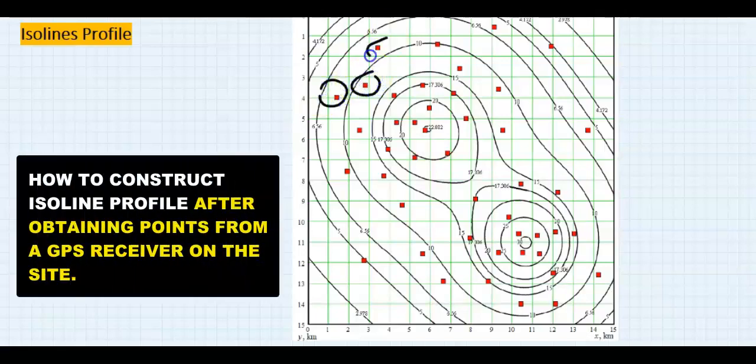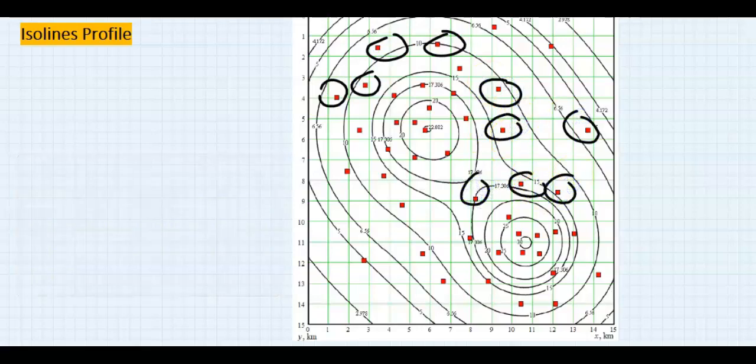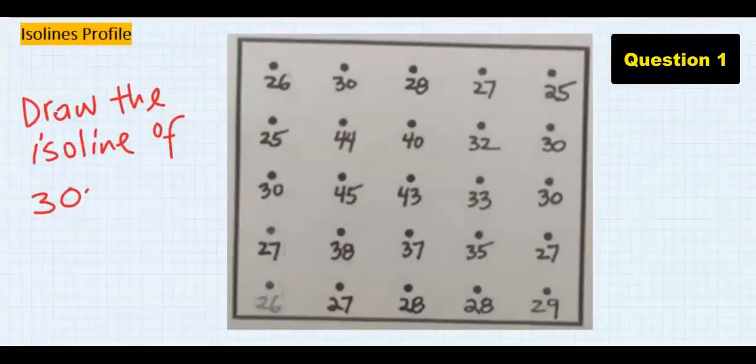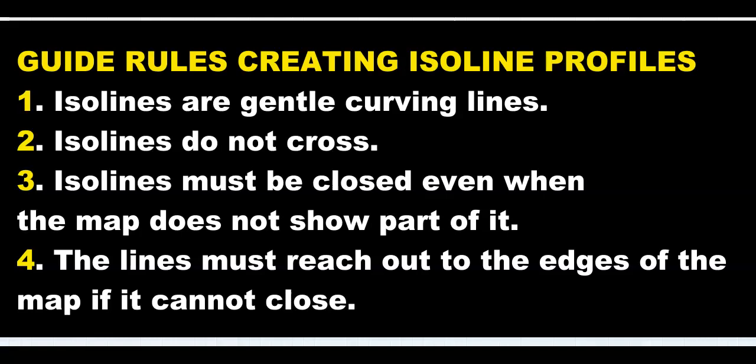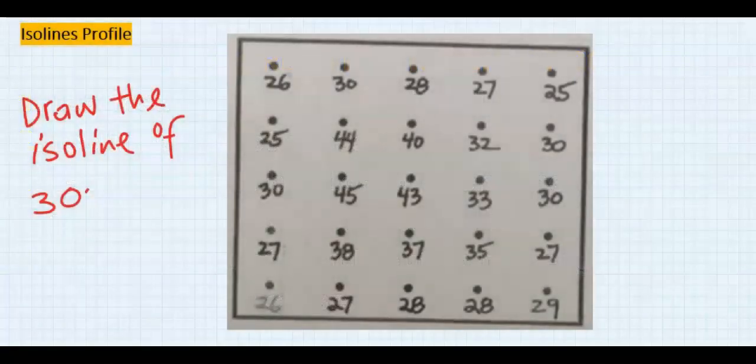Now that we have identified all the points needed, let's learn how to draw the isoline profile. Let's draw an isoline profile of 30. Before we do this, let me give you some guide rules about drawing isolines: number one, they are gentle curving lines; number two, isolines do not cross; number three, isolines must be closed even if the map does not show part of it; number four, the lines must reach the edges of the map if it can't close. Let's start drawing the isoline of 30.